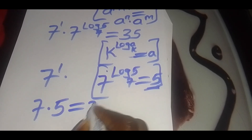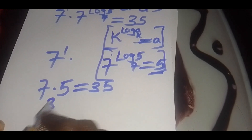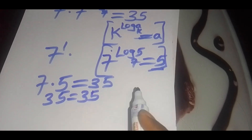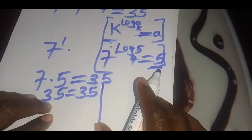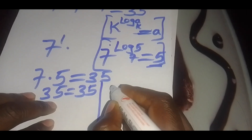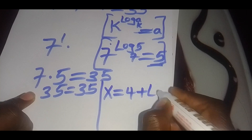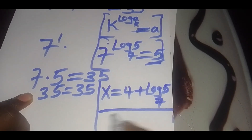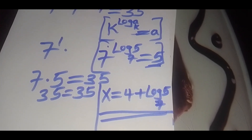So this gives us 7 times 5, which equals 35. The left-hand side equals the right-hand side, confirming that the value of x equals 4 plus log 5 to base 7. This is the solution to our exponential equation. Thank you for watching, and kindly subscribe.